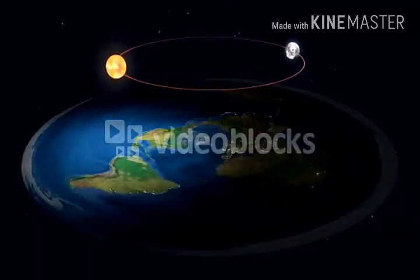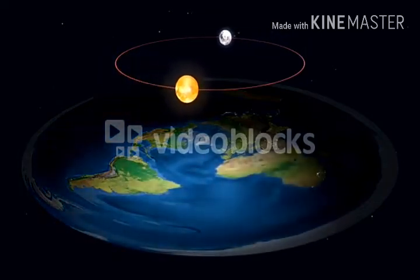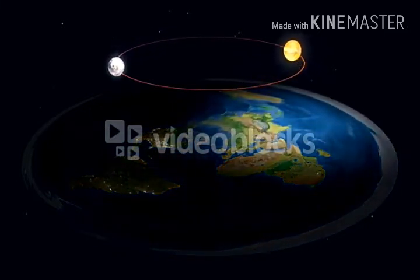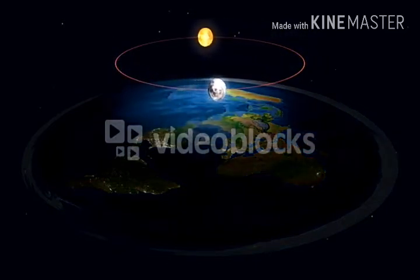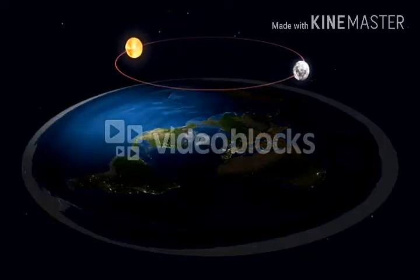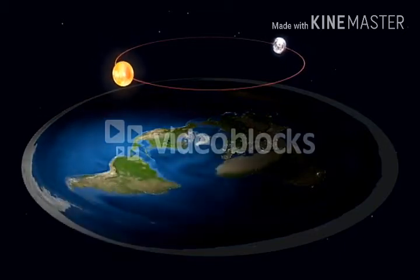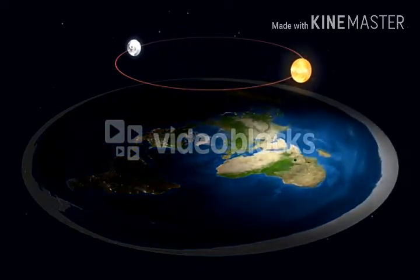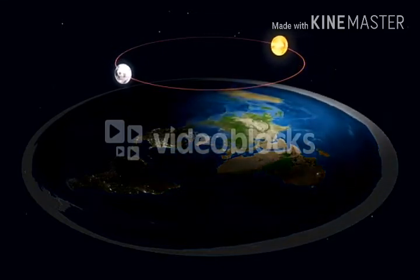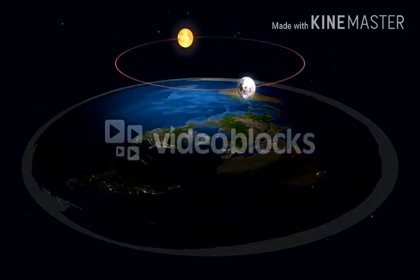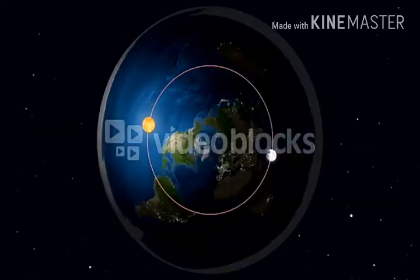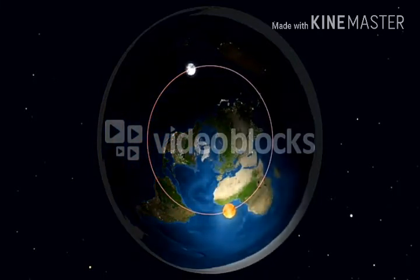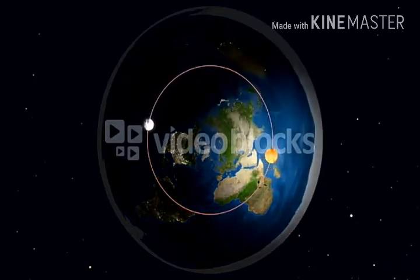Now the question is: if the earth is not a sphere and not rotating around the sun, then how are night and day formed? As shown in the picture, the earth is flat and the sun and moon are revolving in a particular orbit. Whenever the sun goes over one portion, that portion is in day, but the opposite part is in night — that is how day and night are formed. This is the top-most view, and you can easily understand how day and night are formed on the flat earth.